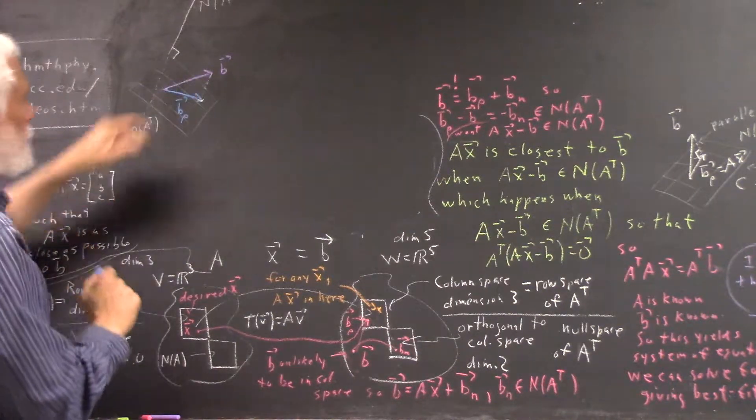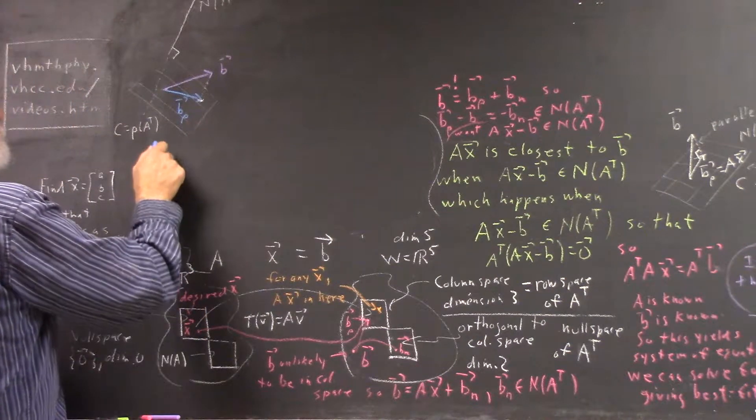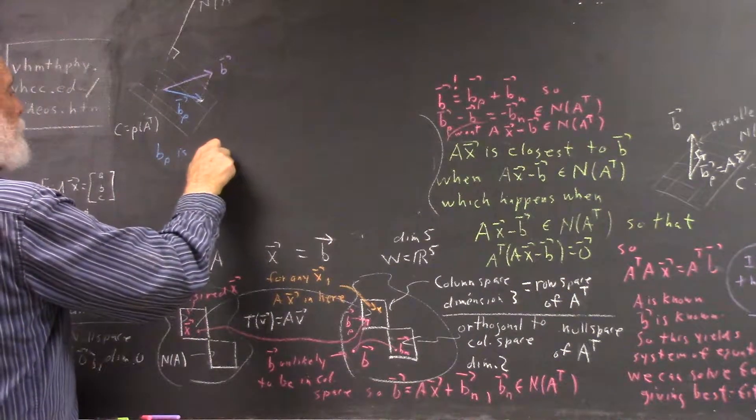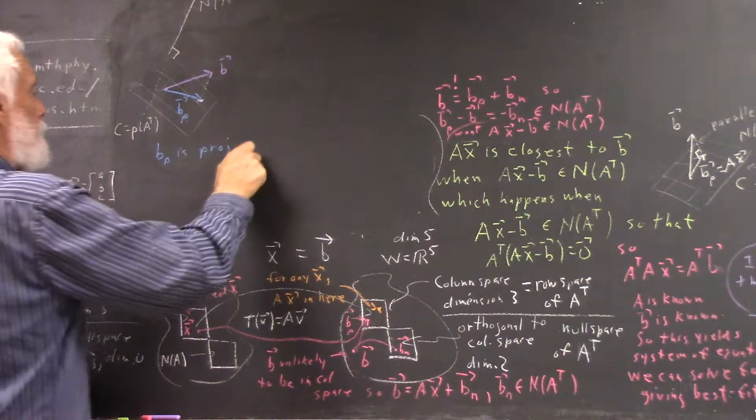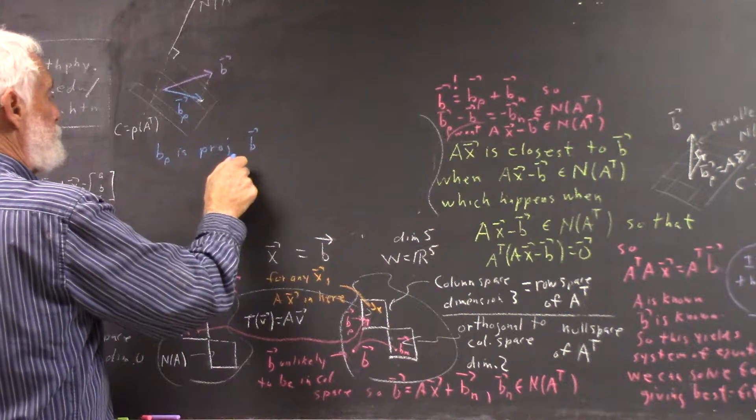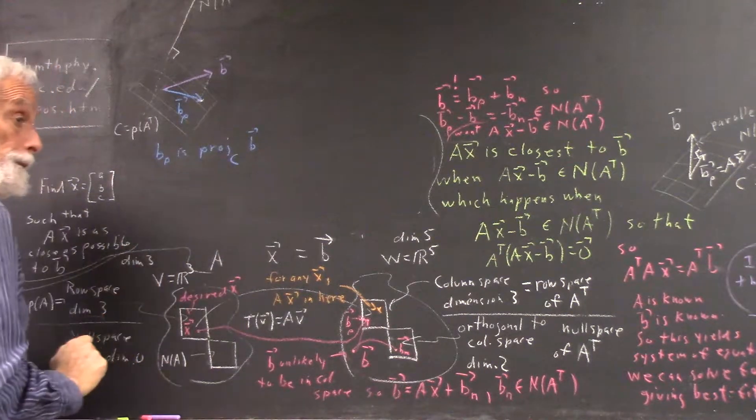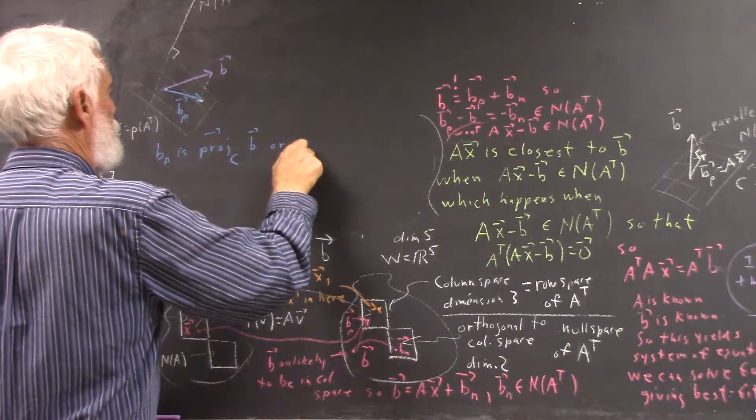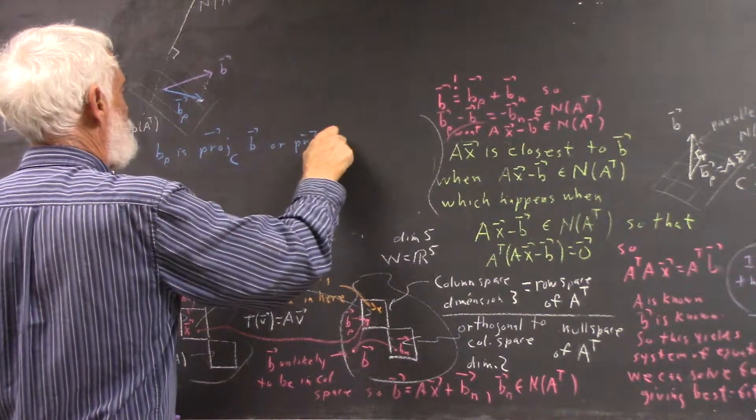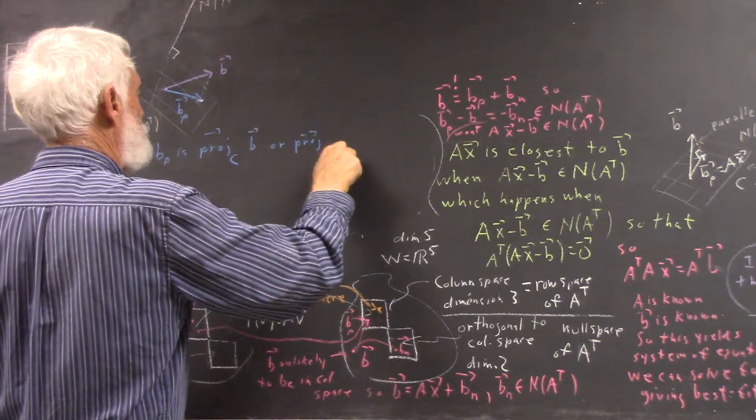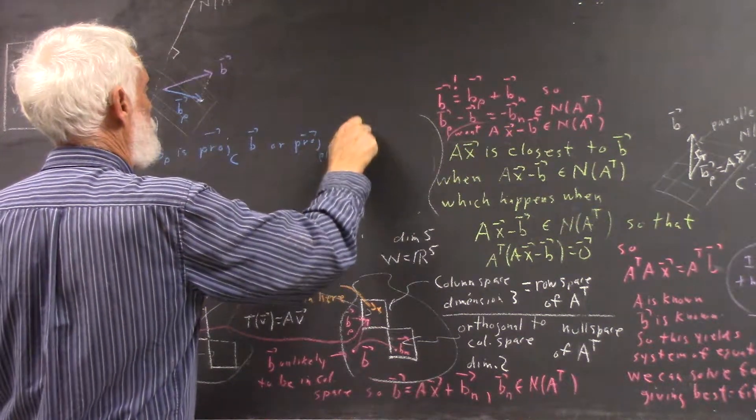The projection of the B vector into the column space, or the projection into rho of A transpose of B.